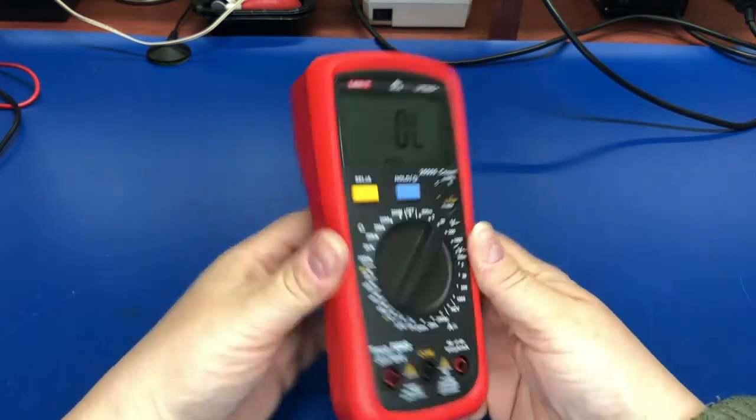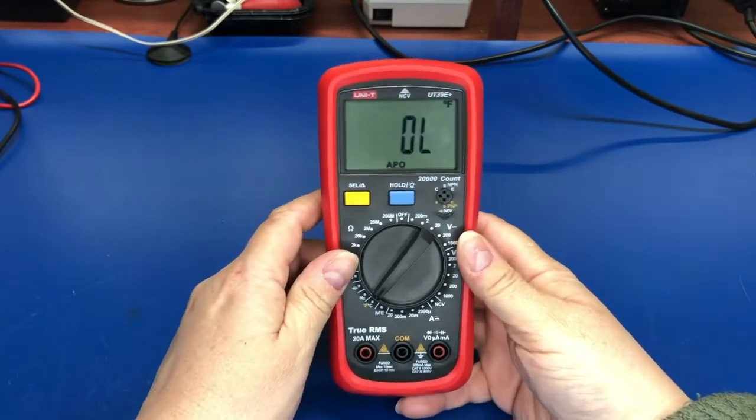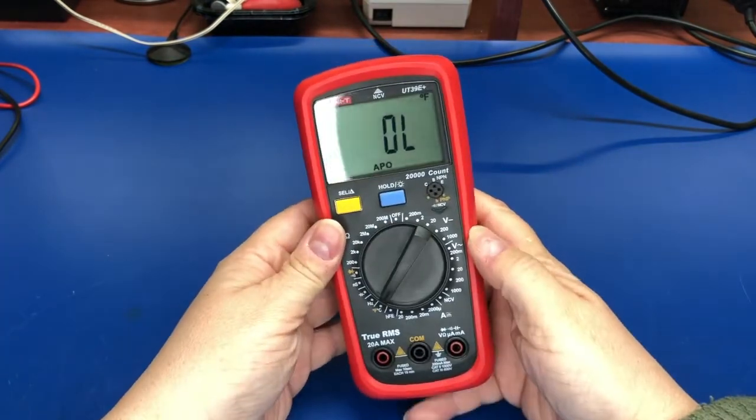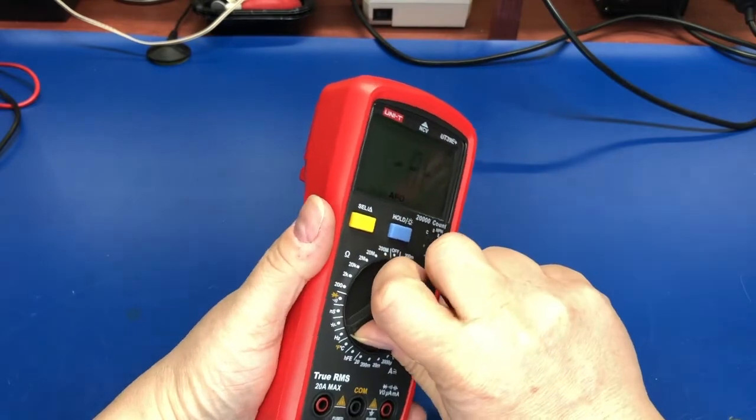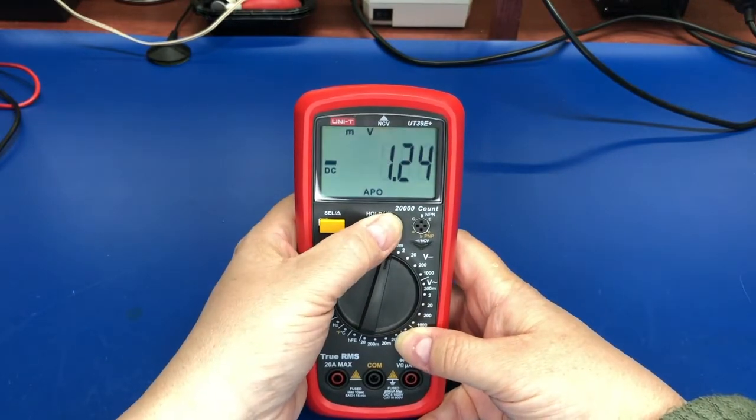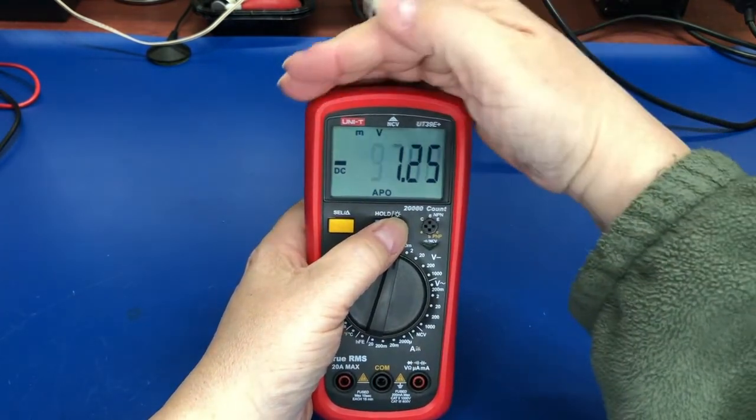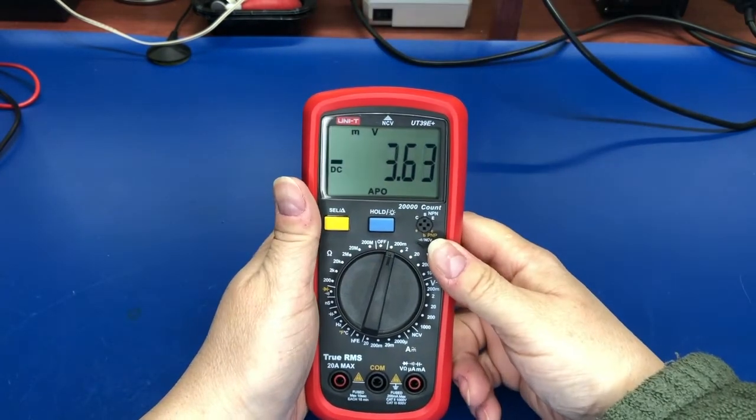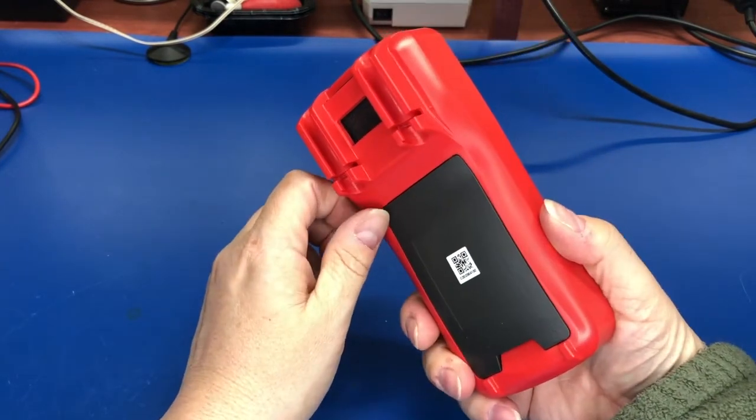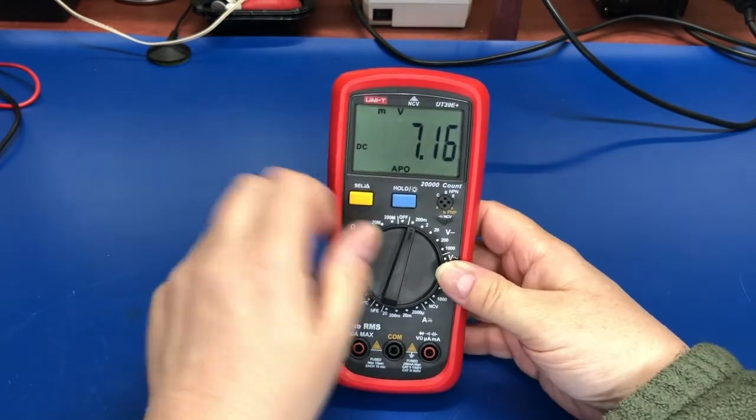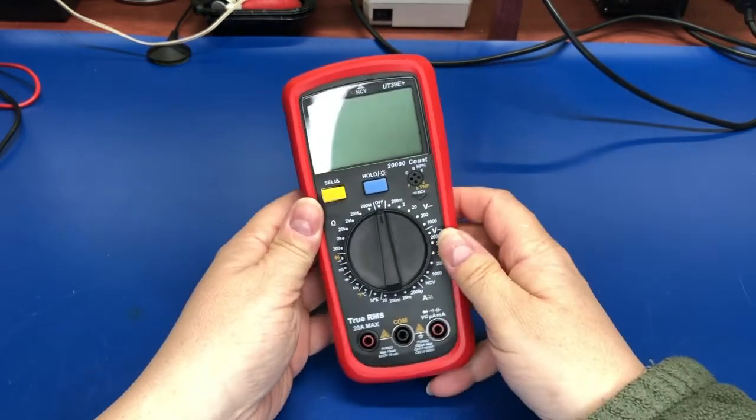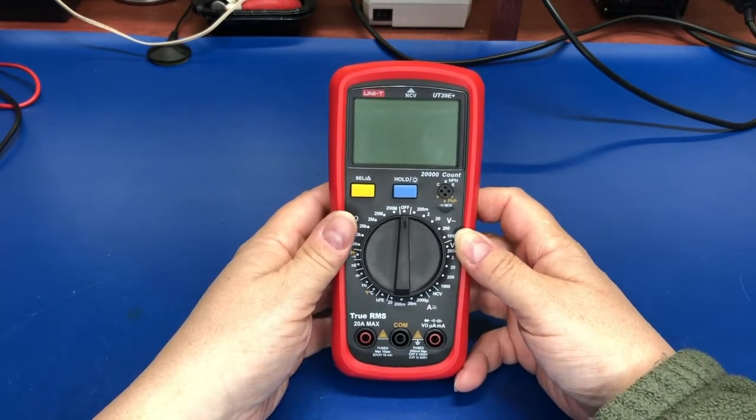So I like it. $40. Seems to be well made, pretty rugged. Switch feels nice. The display, nice-sized display. Has a backlight. Backlight is nice. So yeah. If you're looking for a cheap meter, not too cheap, but cheap enough, I think you could do worse than the UT39E Plus. Like I said, it's a 20,000 count meter. That's really nice.